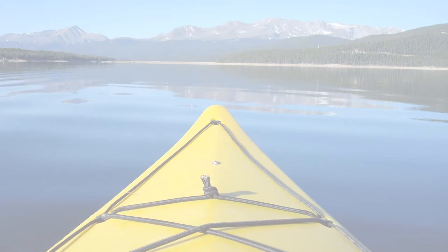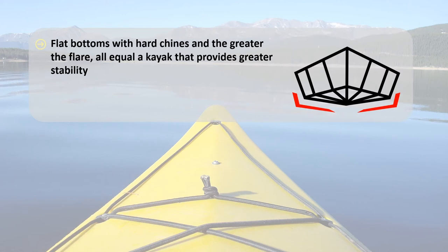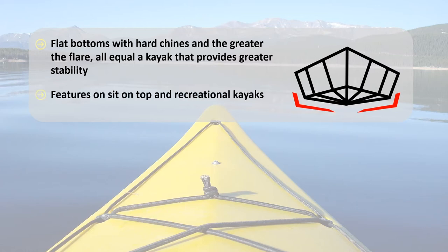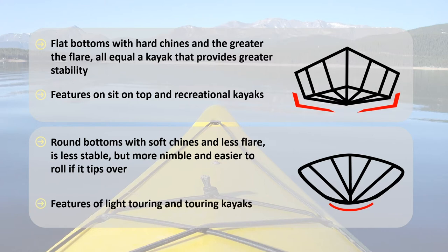A few words now regarding the hull of the kayaks. Flat bottoms with hard chines — that is, the sharp, nearly right-angled edges where the bottom and sides meet — and the greater the flare or curvature of the sides outward, all equal a kayak that provides greater stability. This is found on sit-on-top and recreational kayaks. Round bottoms with soft chines — a gradual curve where bottom and sides meet — and less flare, equal a kayak that has less stability but is more nimble and easier to roll if tipped over. This is found on light touring and touring kayaks.